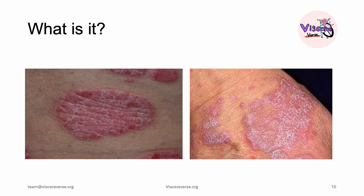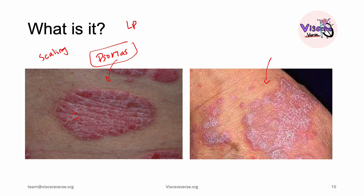If asked to identify two lesions, you might say both are lichen planus, but differential diagnosis is crucial. For instance, one image shows plaque psoriasis — psoriasis is characterized by scaling, so what appears there is not Wickham striae but scales. On the other hand, the other image shows lichen planus, typically seen on the wrist, where the fine thin white lines are actually Wickham striae.